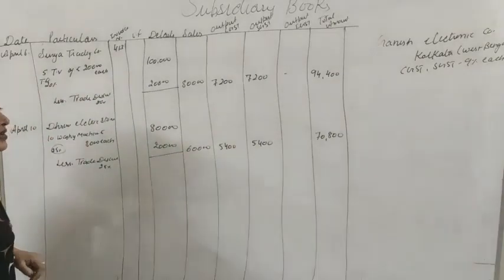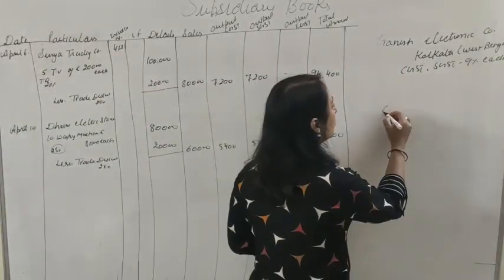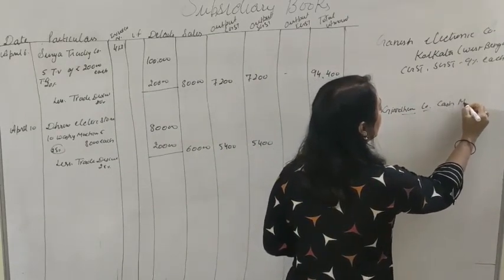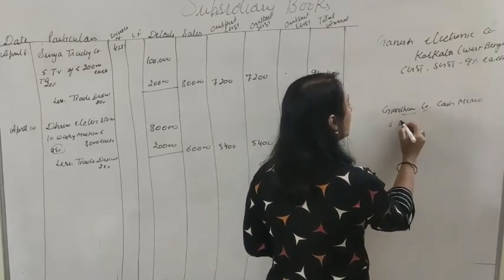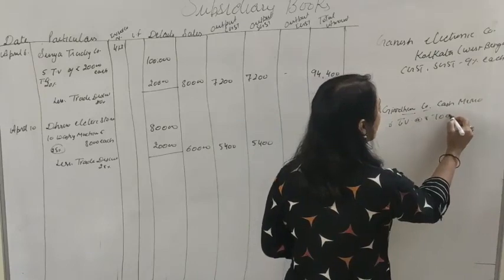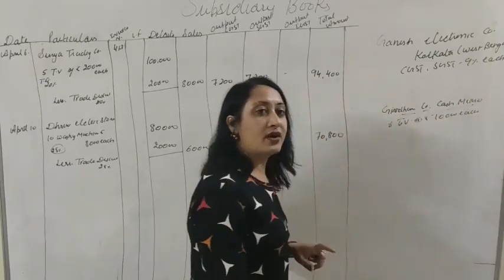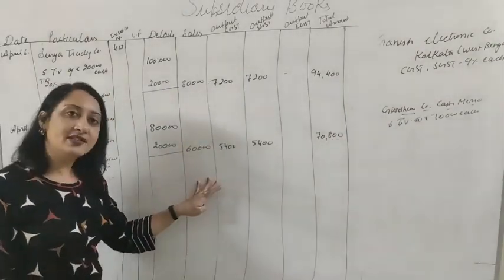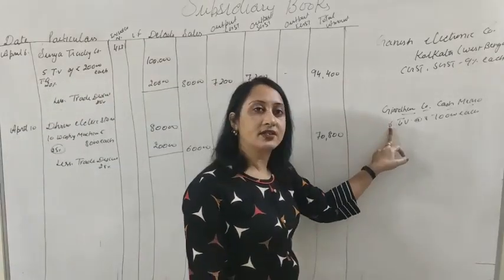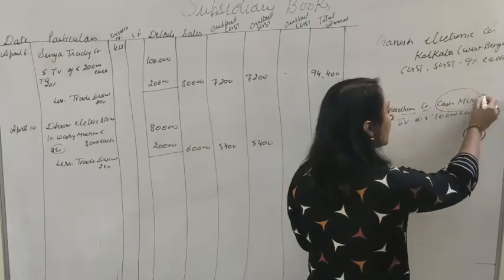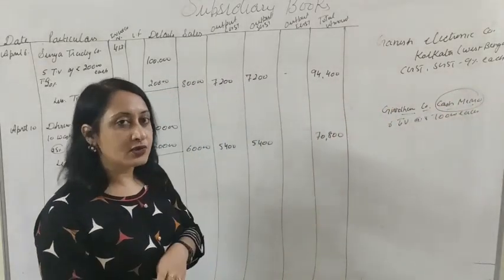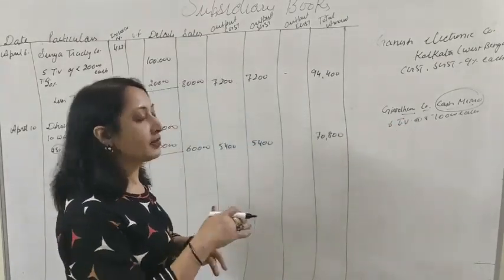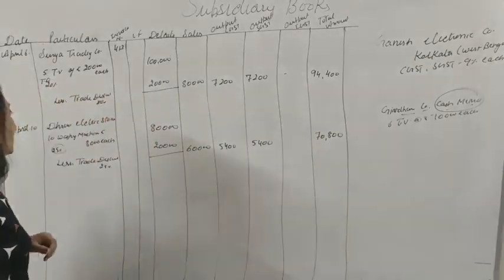Next, he sells to Gidhar Company on a cash memo: 6 TVs at ₹10,000 each. Since the word 'cash memo' is given, it means it is a cash transaction. We only record credit transactions in the sales book. This transaction will be recorded in the cash book.